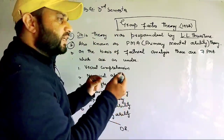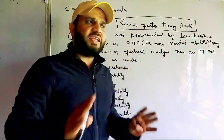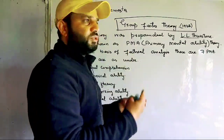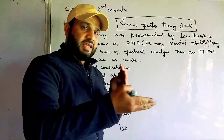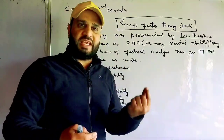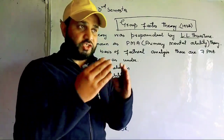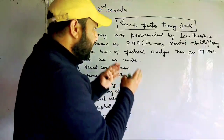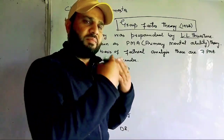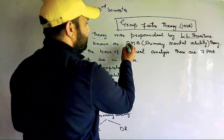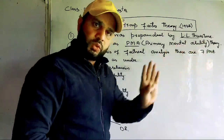This group-factor theory — what is its other name? Also known as PMA: Primary Mental Abilities. Every person has these abilities. Before this, we studied unifactor theory (one ability), then two-factor theory where Spearman said there are only two factors — G factor and S factor. But today we say there are not just two factors. There are many factors, and all of them are called primary mental abilities. It is also called the primary mental ability theory.